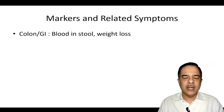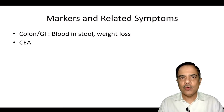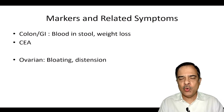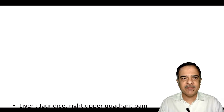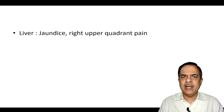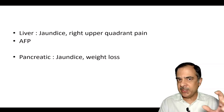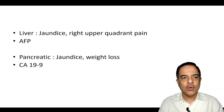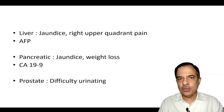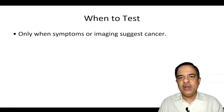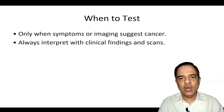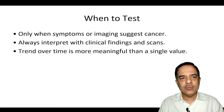From a physician's perspective, when should markers be done? If there is suspicion of colonic or GI cancer — like blood in stool or weight loss — go for CEA. For ovarian cancer with bloating, ascites, or abdominal distension, go for CA-125. Liver cancer presenting with right upper quadrant pain or jaundice, especially in long-standing cirrhosis or alcoholic patients, warrants alpha-fetoprotein. Pancreatic cancer with jaundice or weight loss — go for CA19-9. Prostate issues like difficulty urinating, weight loss, or low back pain suggesting lumbar metastasis — go for PSA. Test only when symptoms or imaging suggest cancer, always interpreted with clinical findings and scans. A trend over time is more meaningful than a single value.